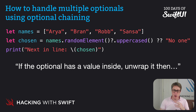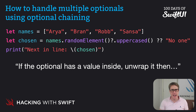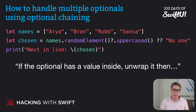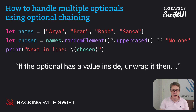Optional chains can go on as long as you want. As soon as any part of the chain sends back nil, the whole rest of the code line is ignored and it sends back nil. Of course, nil coalescing can still provide a value. To give you an example that pushes optional chaining harder, imagine this.